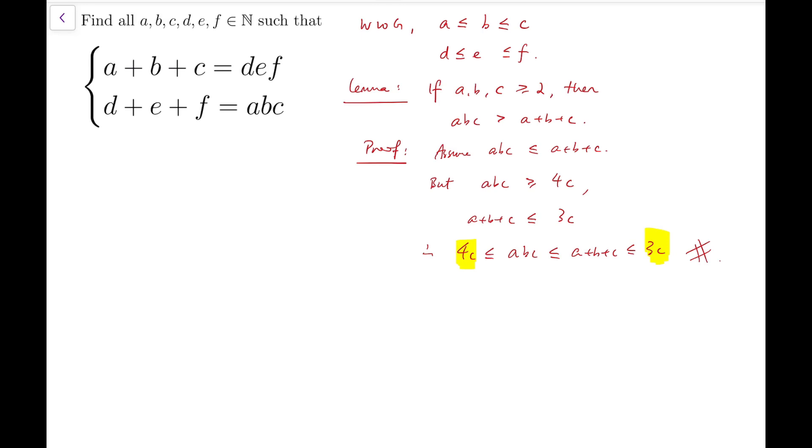So that means if we have a, b, c to be all at least two, then we will have abc to be strictly greater than a plus b plus c. Now back to the main problem.